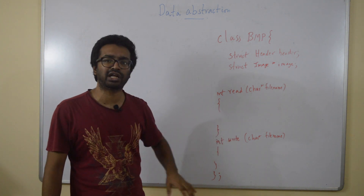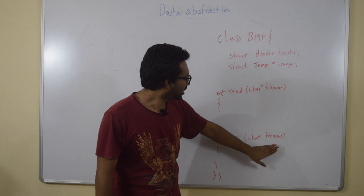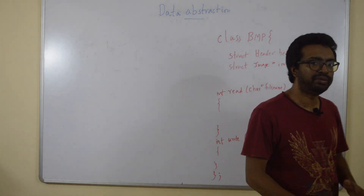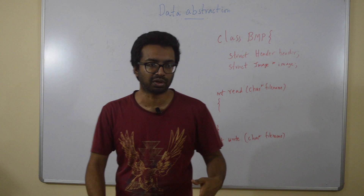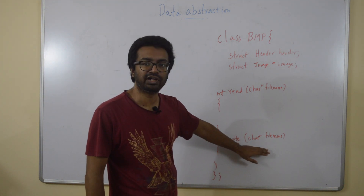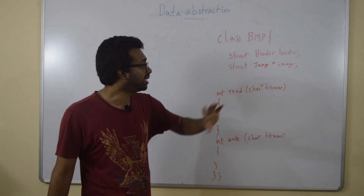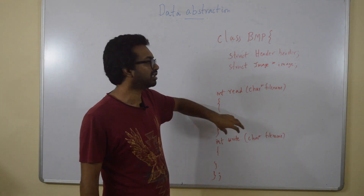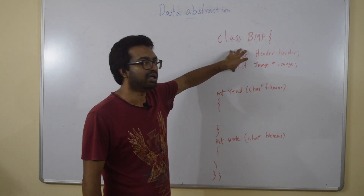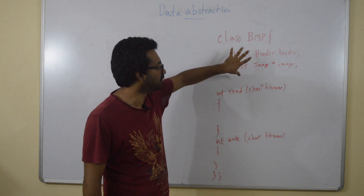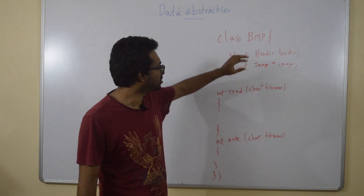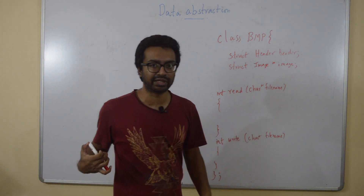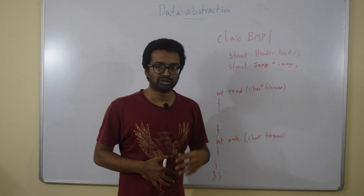Similarly, the write function only takes a file name. In the earlier version, you also had to pass in the BMP structure. Now you don't — the structure information is already stored inside the class. Whatever was read into the class is written out from the class, so nothing needs to be passed to or received from the outside. It's all hidden inside the class.